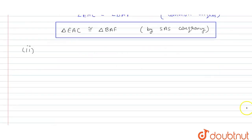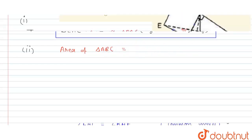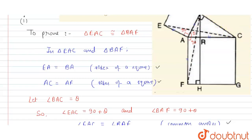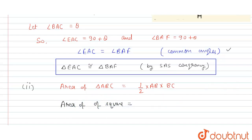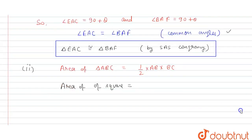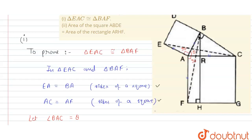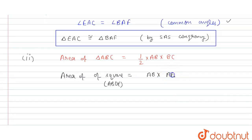As we know, the area of triangle ABC is equal to half of AB multiplied by BC. We use this condition. The area of square ABDE equals AB multiplied by AE, or AB squared.